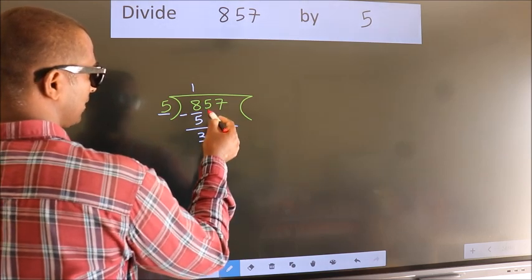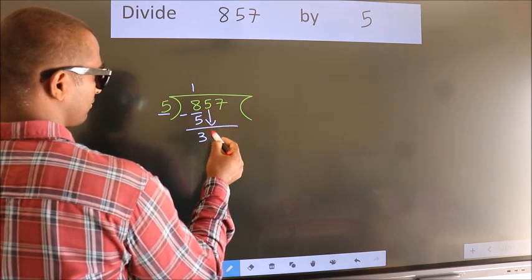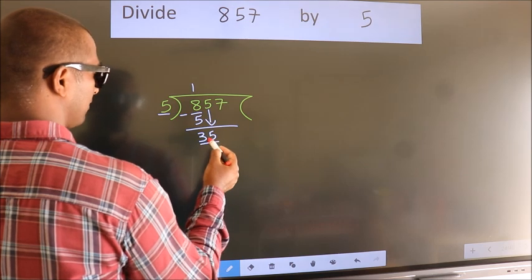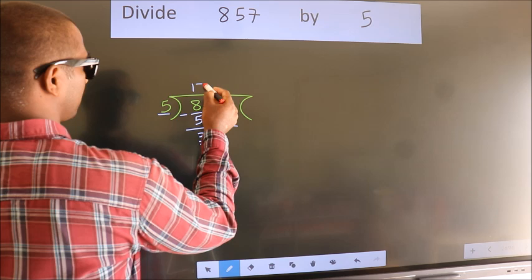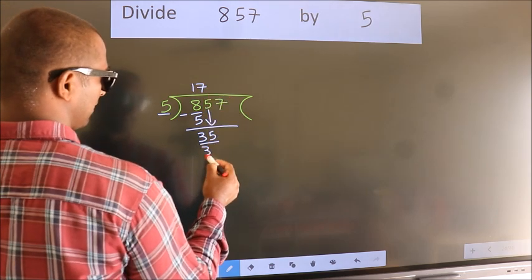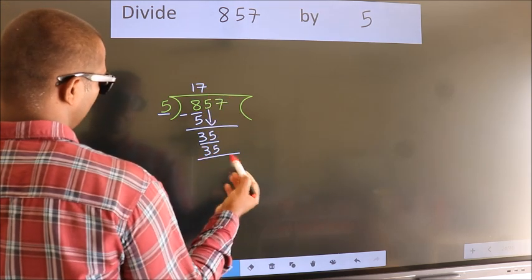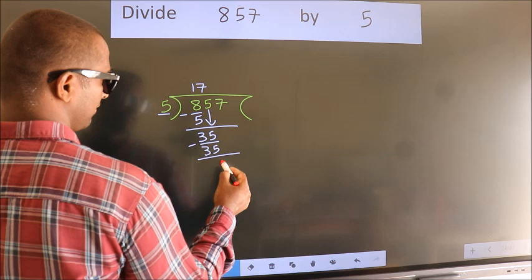After this, bring down the beside number. So 5 down, so 35. When do we get 35? In 5 table, 5 sevens 35. Now we subtract. We get 0.